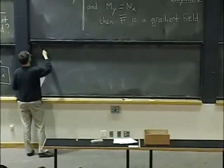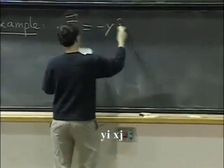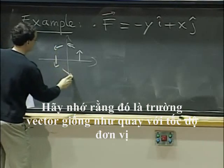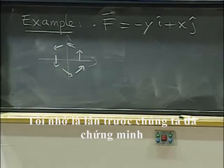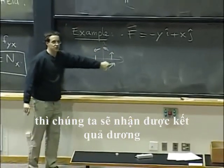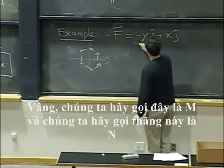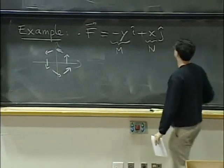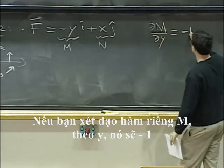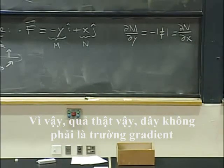Let's look at an example. One vector field that we have been looking at a lot was minus y i plus x j. Remember, that was the vector field that looked like rotation at unit speed. Last time we already decided that this should not be a gradient field and should not be conservative, because if we integrate on the unit circle we get a positive answer. But let's check that it fails our test. Let's call M equal to minus y and N equal to x. Then partial M partial y is negative one. Partial N partial x is one. These are not the same, so indeed this is not a gradient field.